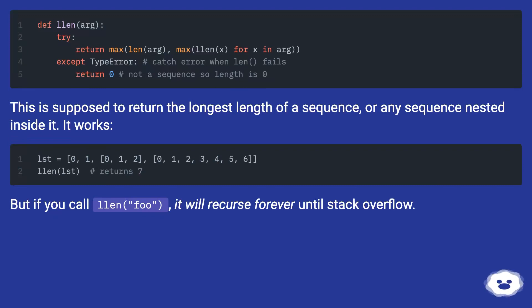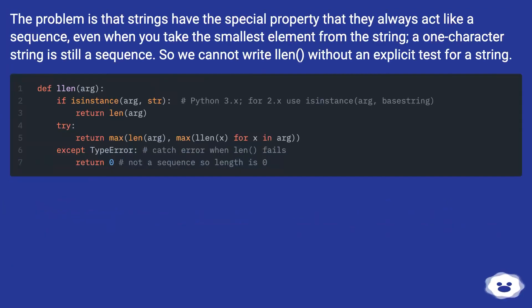This is supposed to return the longest length of a sequence, or any sequence nested inside it. It works, but if you call it with a string, it will recurse forever until a stack overflow. The problem is that strings have the special property that they always act like a sequence — even a one-character string is still a sequence. So we cannot write that function without an explicit test for string.